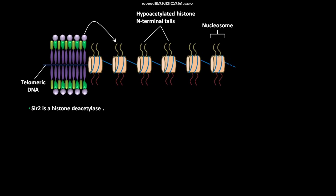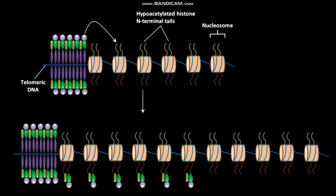In the next step, these hypoacetylated histone N-terminal tails bind to SIR3 and SIR4. The SIR4 protein then binds additional SIR2 protein.